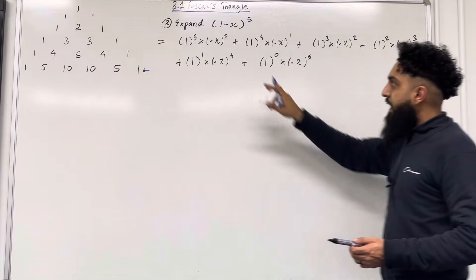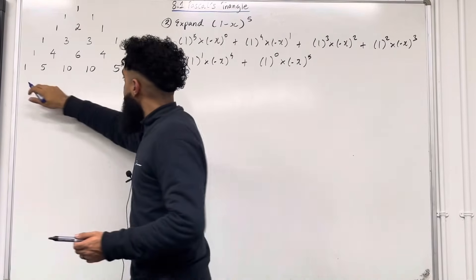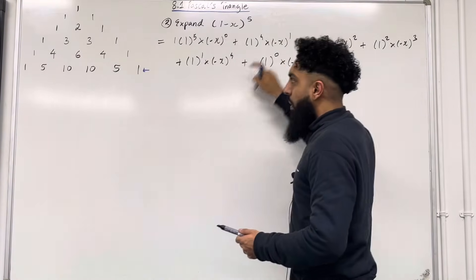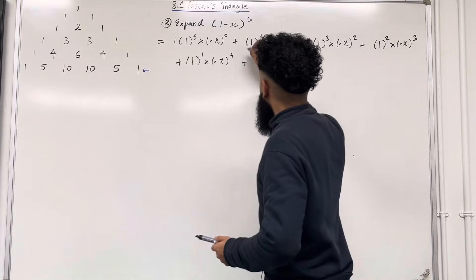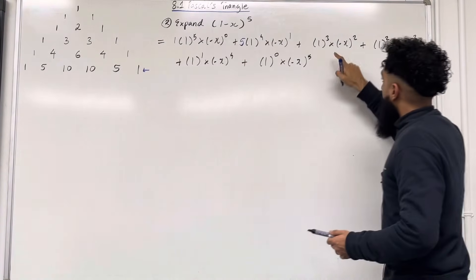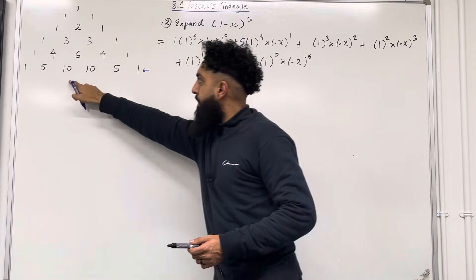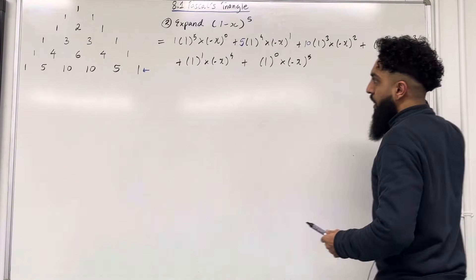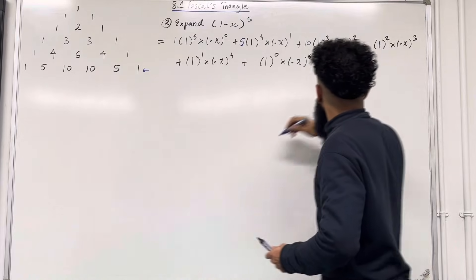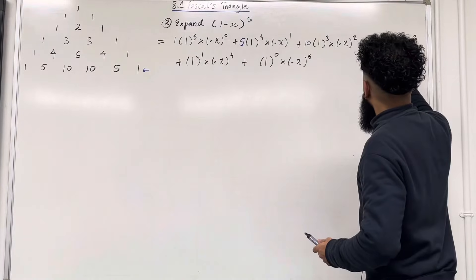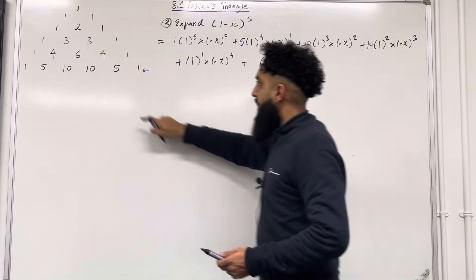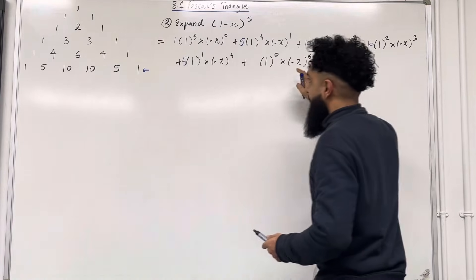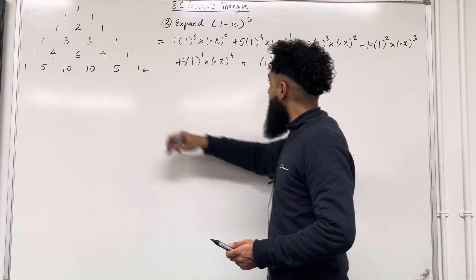For the 1st term the coefficient is 1. The 2nd term the coefficient is 5. The 3rd term the coefficient is 10. The 4th term the coefficient is 10. The 5th term the coefficient is 5. And the 6th term the coefficient is 1.